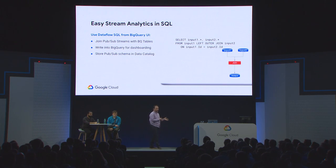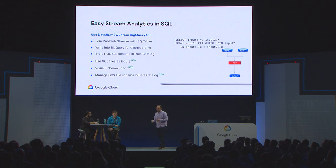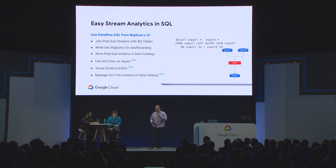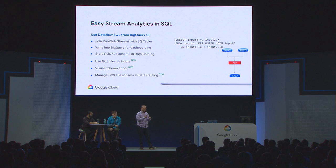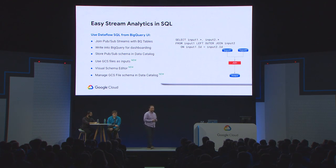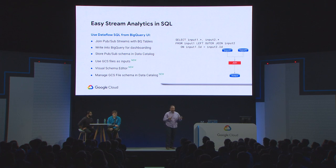On the SQL side, a couple of months ago we launched the preview of Dataflow SQL. Today we are launching several new features. We are allowing you to use files as inputs into your pipelines, so you can now join a PubSub stream with GCS files. Three sources are currently supported: GCS files (new), BigQuery tables, and PubSub topics. We also released a visual schema editor to define schemas of data sources, and you can now store the schema in Cloud Data Catalog, our metadata storage service.